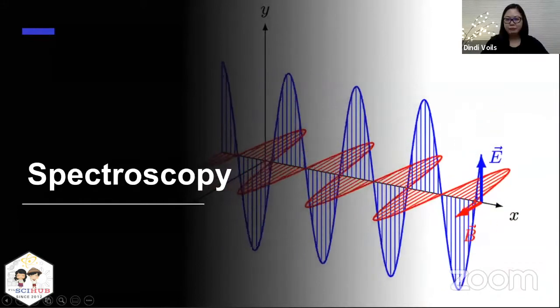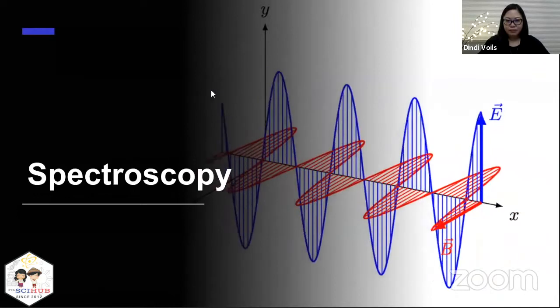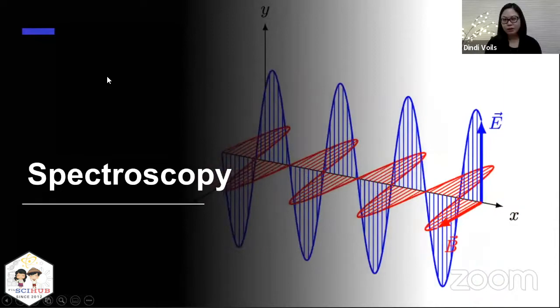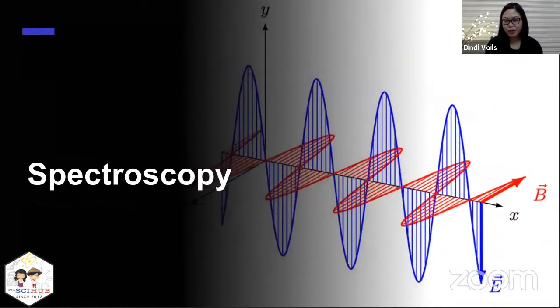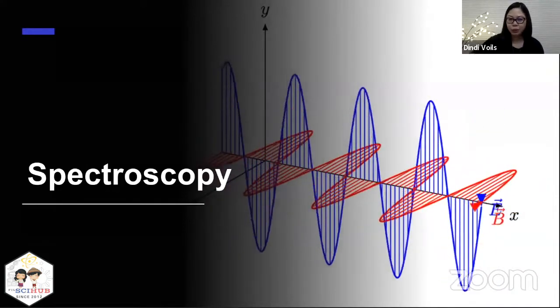So spectroscopy, as you can see on the animation on the screen, you see you have a wave which are 90 degrees to each other. That's called an electromagnetic radiation. It has an electric field and a magnetic field component.